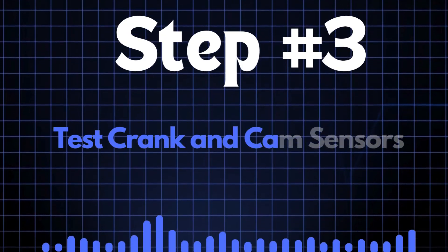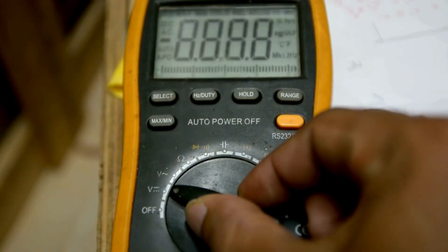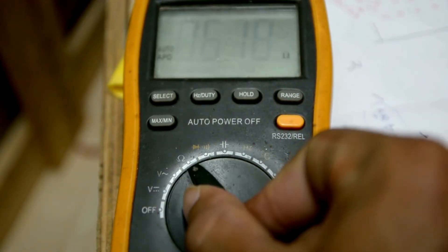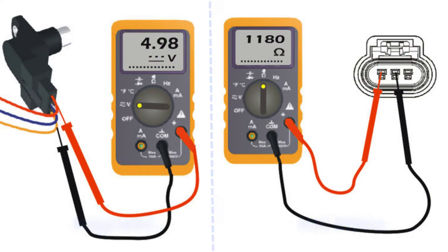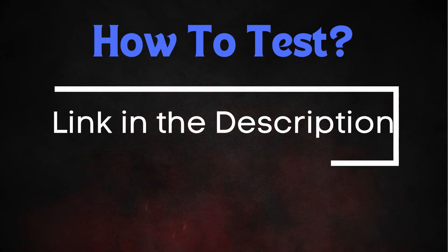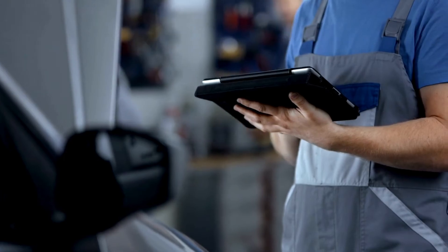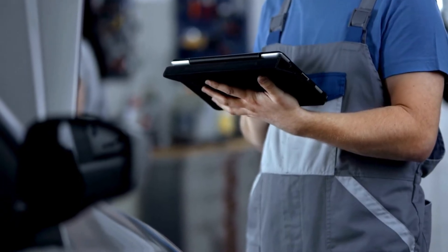Step 3: Test crank and cam sensors. You can test the crank and cam sensors using a multimeter. However, the testing method varies depending on whether you have a hall effect sensor or a permanent magnetic sensor. To learn more about testing crank and cam sensors, check out our detailed video on this topic — the link is in the description below. If both the crank and cam sensors test okay, it's time to move on to the next step.